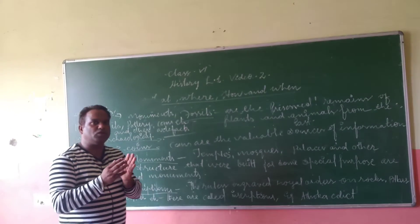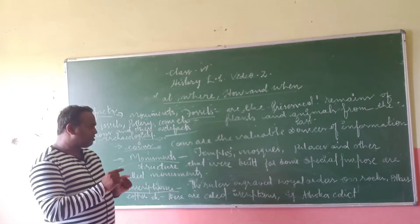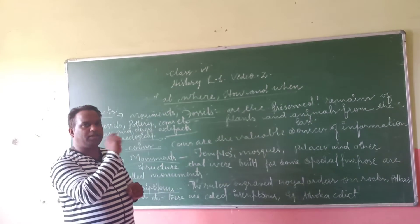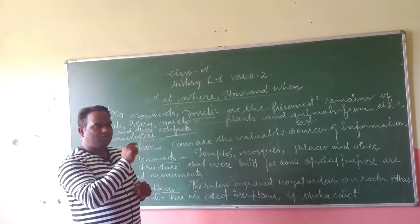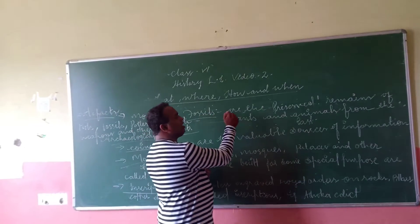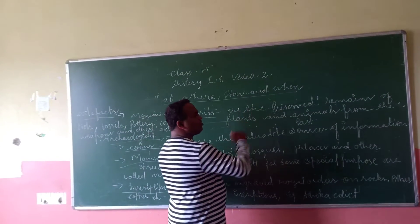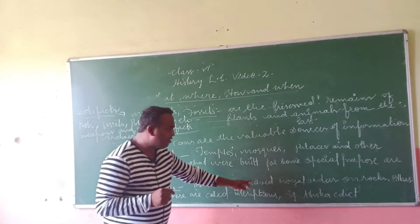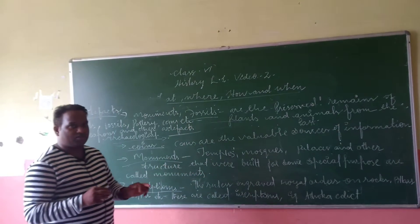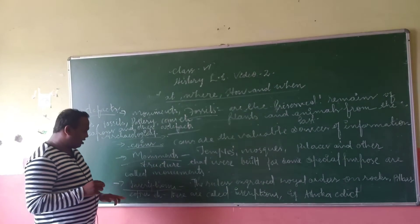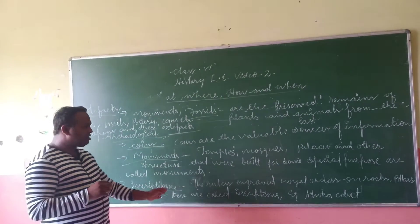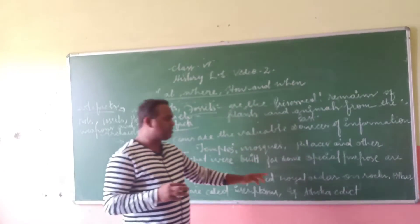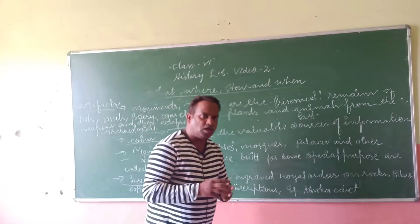What do we mean by inscription? The rulers engraved royal orders on rocks, pillars, copper, etc. One example is Ashoka's edicts.